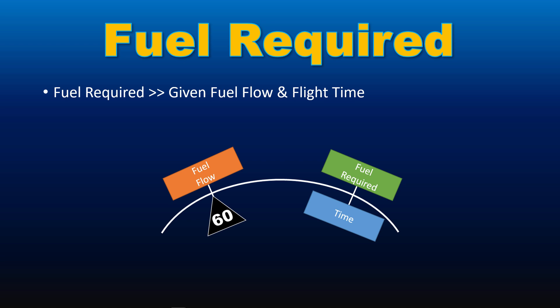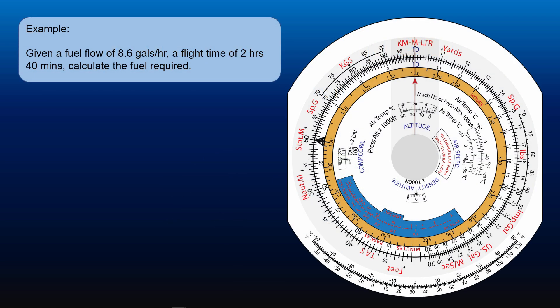An example would allow us to demonstrate the correct method. Given a fuel flow of 8.6 gallons per hour, a flight time of 2 hours 40 minutes, calculate the fuel required. As always, we get an approximate figure to allow us to judge the scale of the answer.